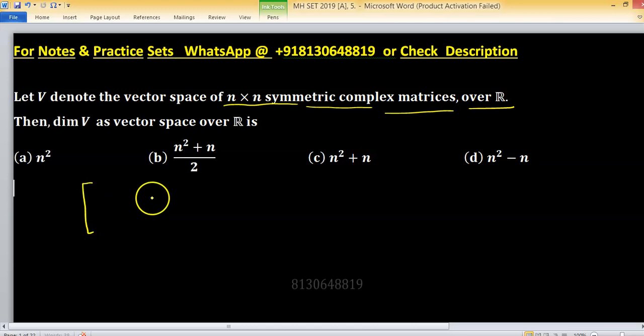What does it mean? This means suppose you have a 2 cross 2 complex matrix over R. So A plus B iota, C plus D and other 2 entries. This is the structure of any element that belongs to the vector space V.